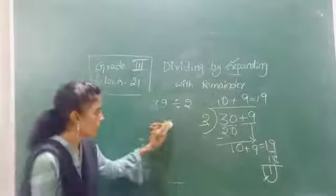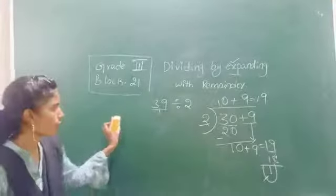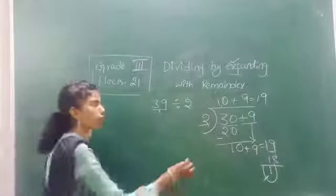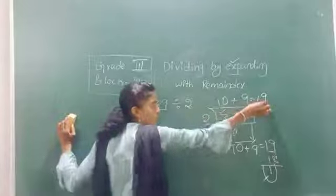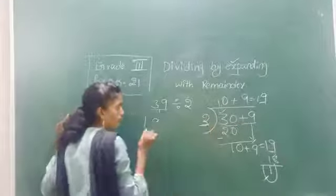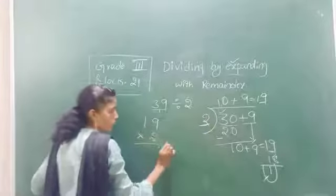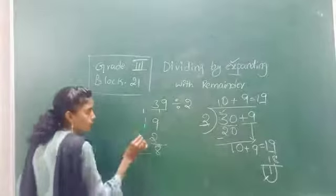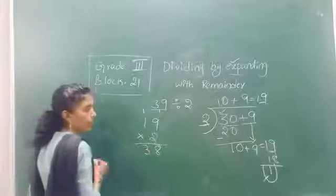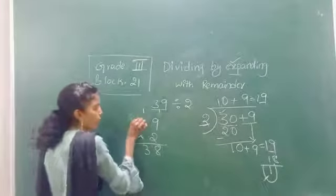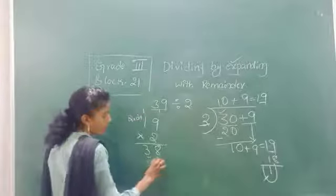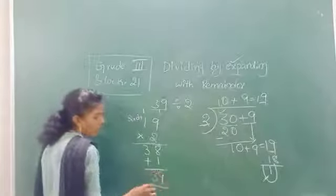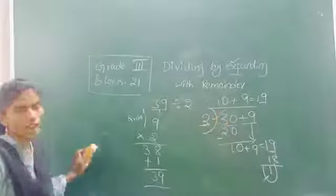So how can we check the answer, children? Multiply the quotient with the divisor, then add the remainder — and you should get the dividend. The quotient is 19, so multiply with the divisor: 2 nines are 18, 2 tens are 2 plus 1 is 3, giving 38. Then quotient times divisor plus remainder: 38 plus 1 is 39. The dividend is also 39. So the answer is correct!